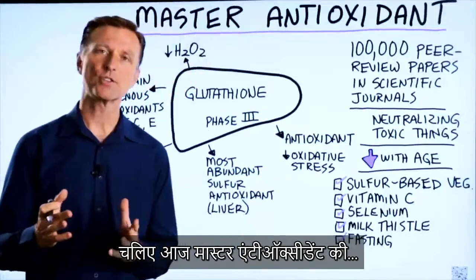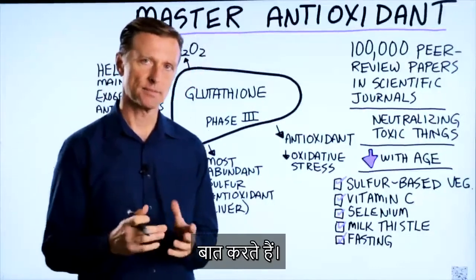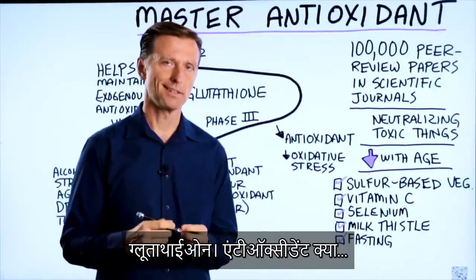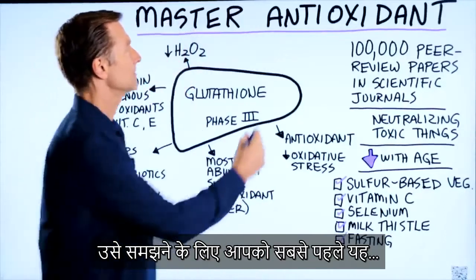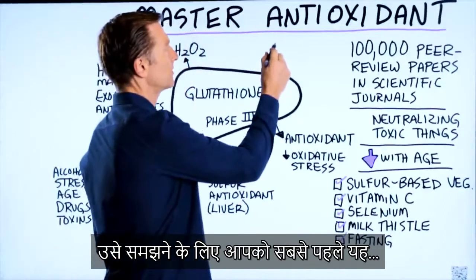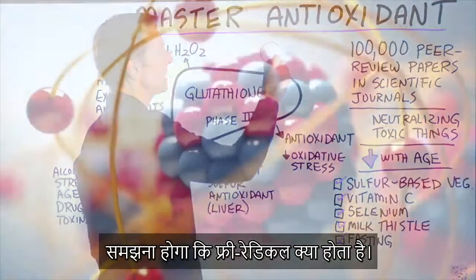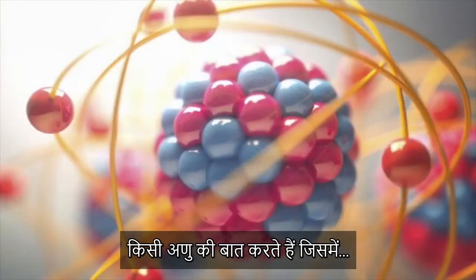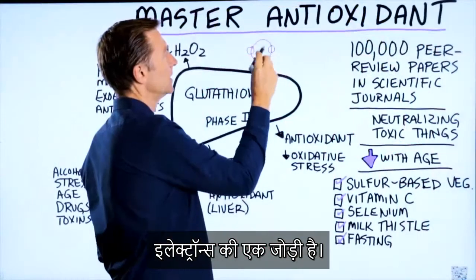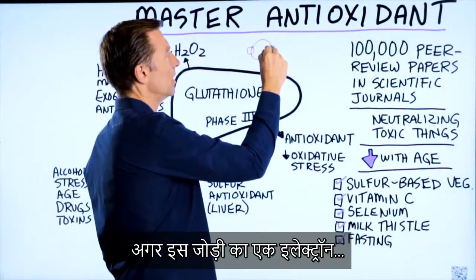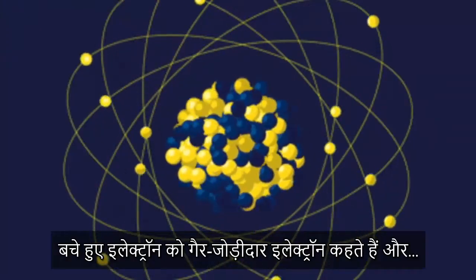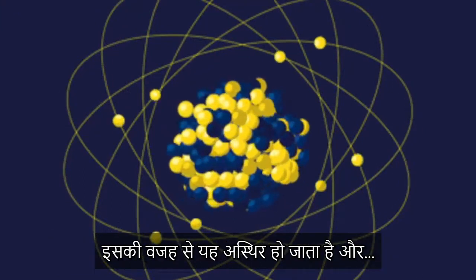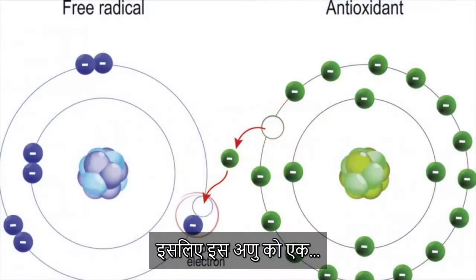Today, let's talk about the master antioxidant, glutathione. What is an antioxidant? Well, to understand that, you have to understand what a free radical is. You take an atom with paired electrons — if one of those electrons is missing, we have what's called an unpaired electron, making it unstable. That's called a free radical.